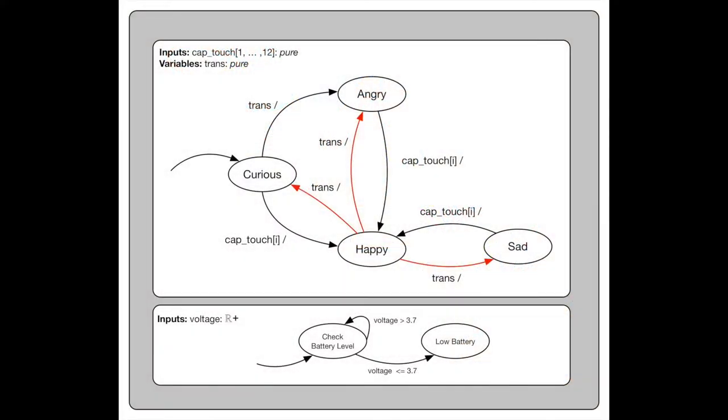In order for the fish to convey emotion, we chose motions and colors that we thought best represented what the fish would look like when it is happy, sad, angry, and curious.